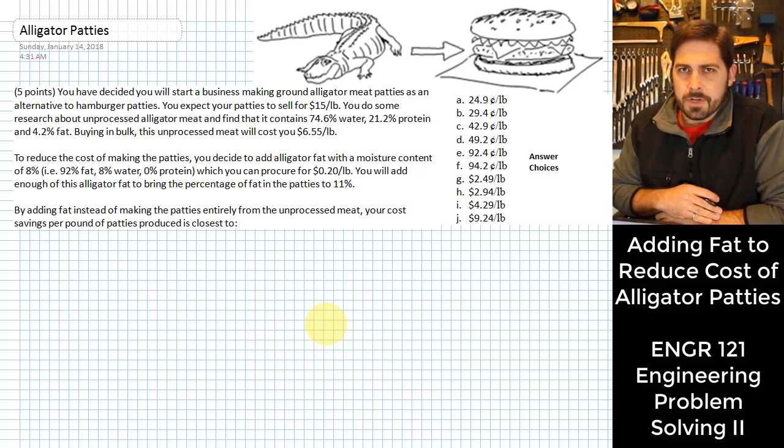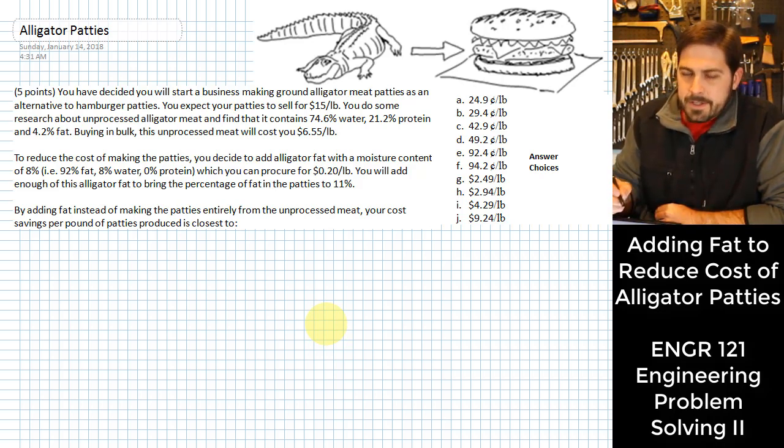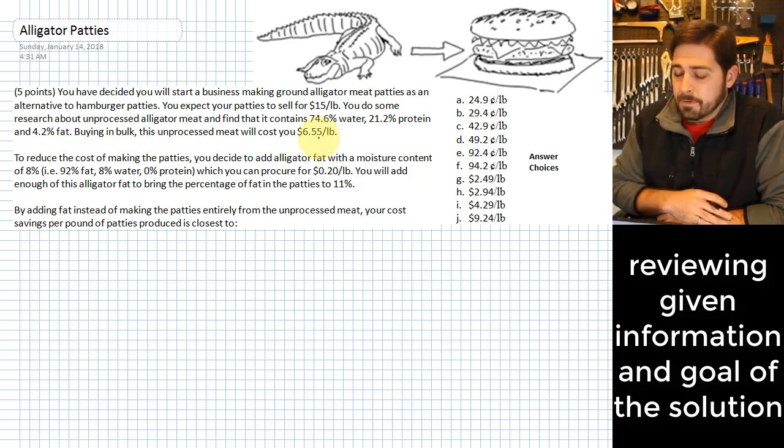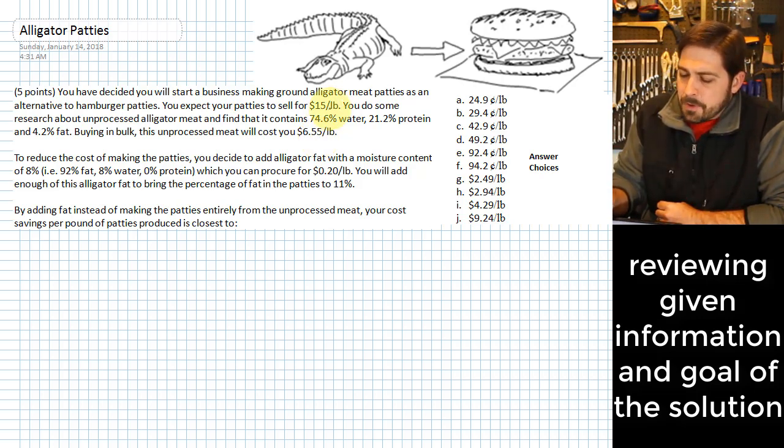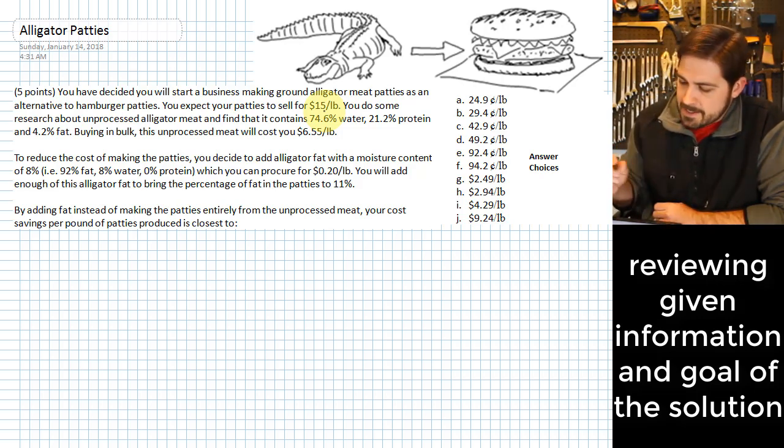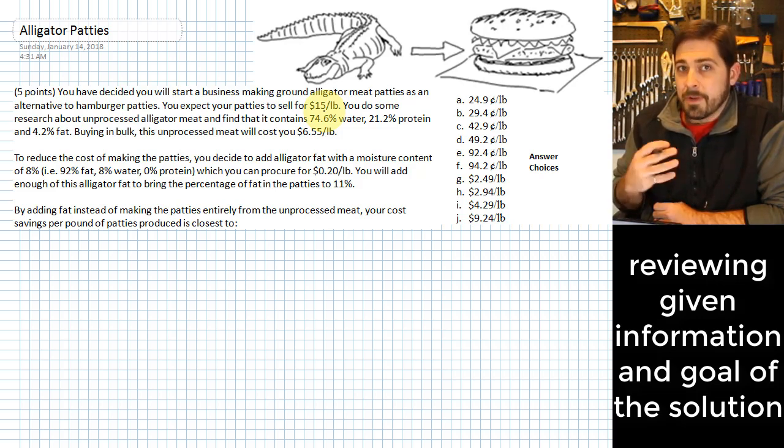So what you do is you start doing some research. And you figure out that your alligator meat that you can get is going to be a certain amount of water, protein, and fat. And that by buying it in bulk, you can get it for about $6.55 a pound. With $15 a pound what I can sell it for, it'd be nice if I could improve my profit margin a little bit. So you find out also that you can obtain just plain alligator fat. And you're thinking, maybe I could mix some of that in with my patties and reduce the cost of making these patties.